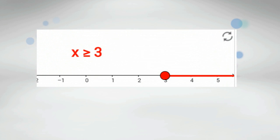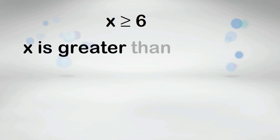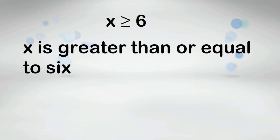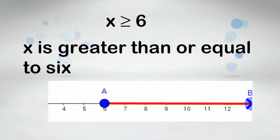x is greater than or equal to 3. A closed point is used because the 3 is included. x is greater than 6. Again, the closed point is used because the 6 is included.